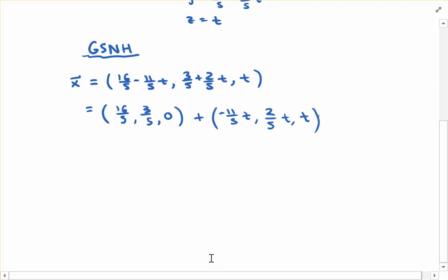1, 1, 1 isn't the only solution. If we were to plug 16 fifths, 3 fifths, 0 into the non-homogeneous linear system, we would see that this is also a solution.